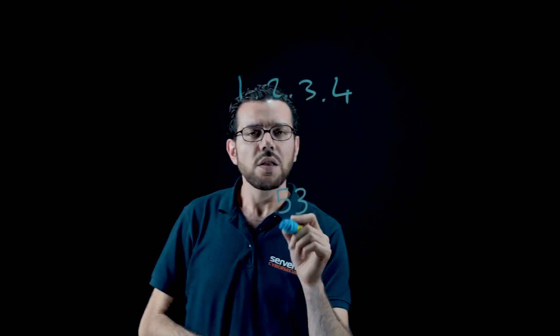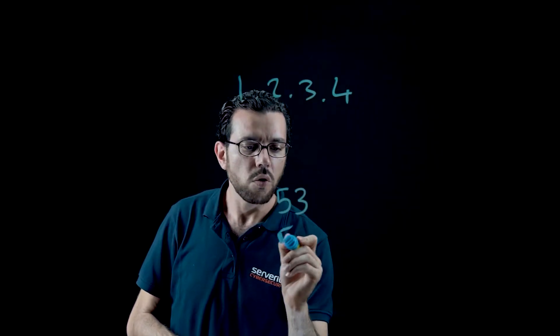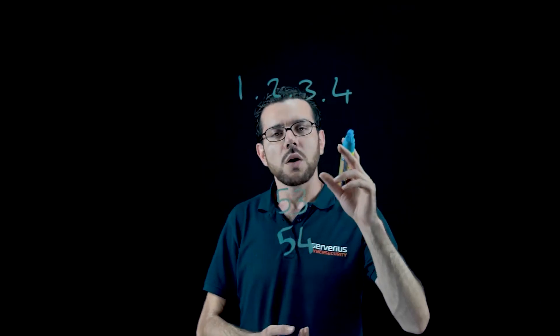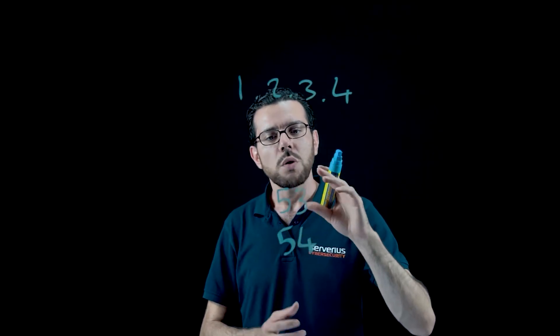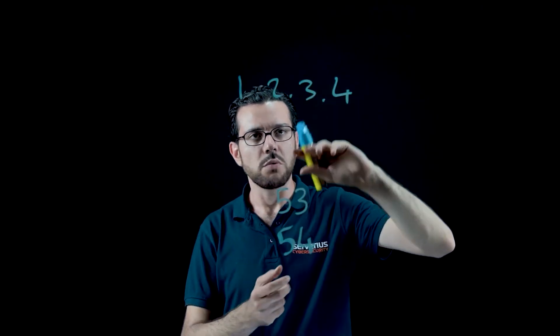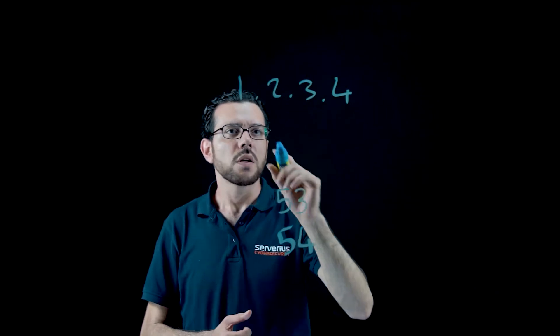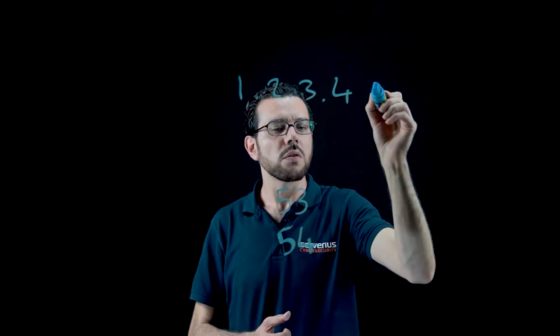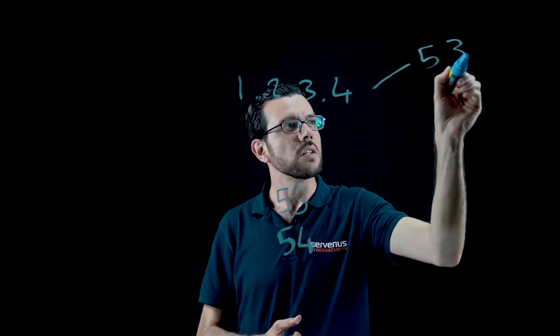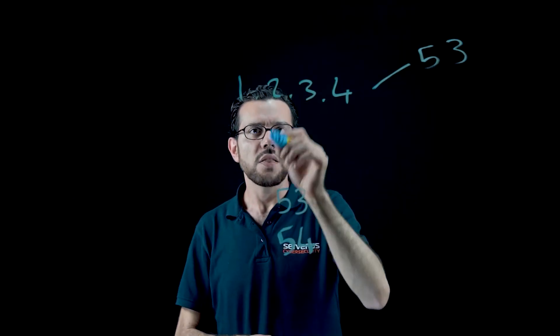Now if you add another port like 54, what will happen? The system will make two combinations of these two attributes: the first one, the IP address 1.2.3.4 and destination port 53, and the other combination is 1.2.3.4 and port 54.